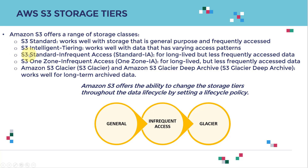The third category includes S3 Standard-Infrequent Access and S3 One Zone-Infrequent Access, used for long-lived but less frequently accessed data. S3 One Zone simply stores your data in only one availability zone. Then there is Amazon S3 Glacier and S3 Glacier Deep Archive for extremely long-term archival data — for example, medical records you want to store but don't plan to access anytime soon.